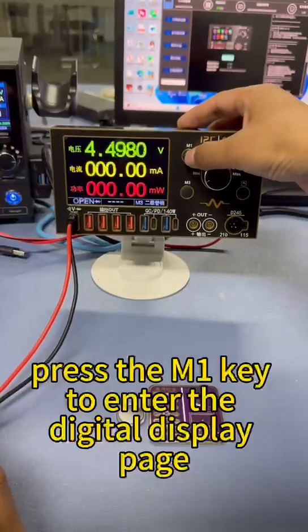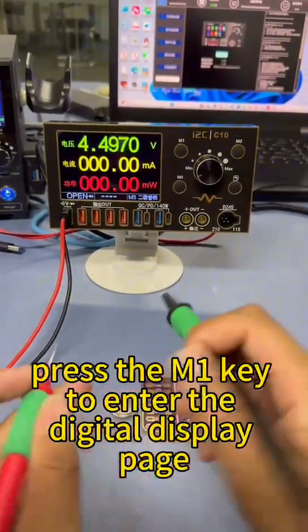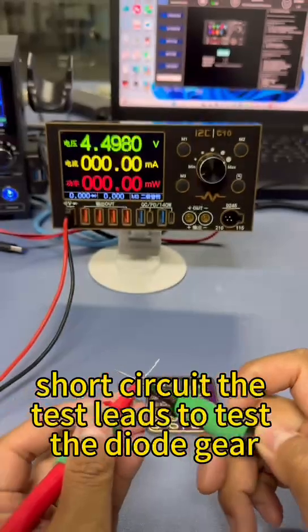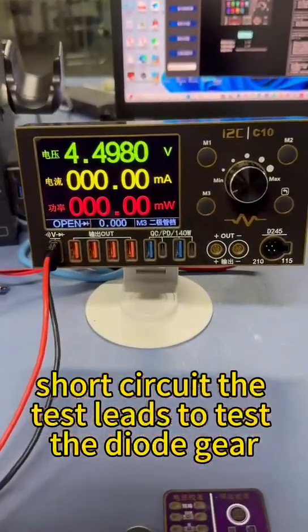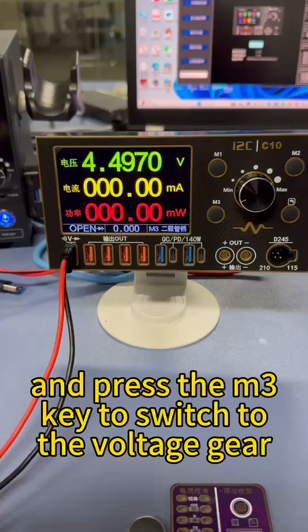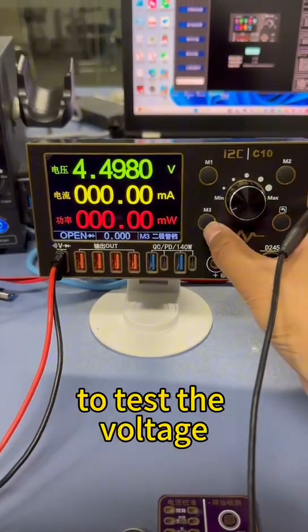Press the M1 key to enter the digital display page. Short circuit the test leads to test the diode gear, and press the M3 key to switch to the voltage gear to test the voltage.